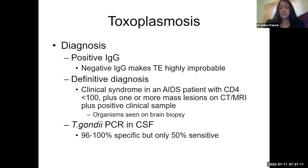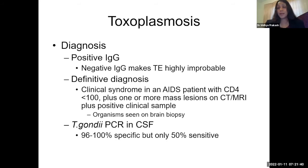For diagnostic testing, start with a positive IgG — a negative IgG makes toxoencephalitis highly improbable. A definitive diagnosis requires the clinical syndrome in an AIDS patient with CD4 less than 100, one or more mass lesions on CT or MRI, plus organisms seen on brain biopsy. Toxoplasma PCR in CSF can be helpful — very specific, but only 50% sensitive — so a negative test does not rule it out.